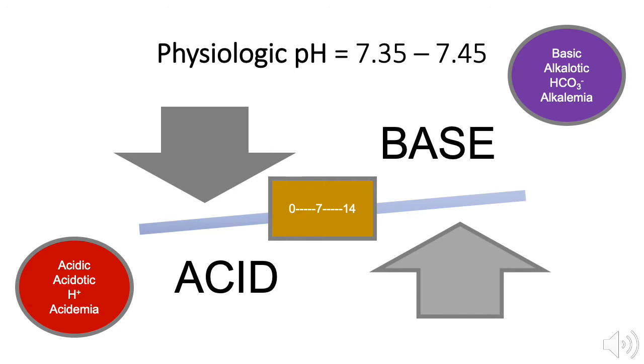Too much acid in the blood is called acidemia. Too much base in the blood is called alkalemia.